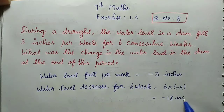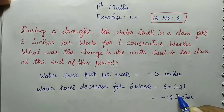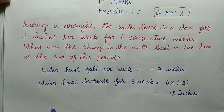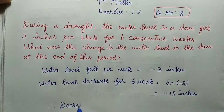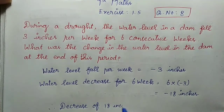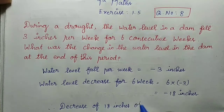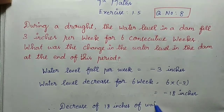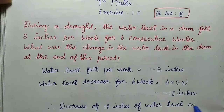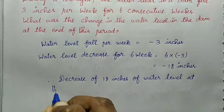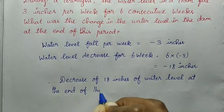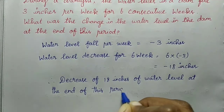Plus into minus gives minus. So the answer is minus 18 inches. Therefore, there is a decrease of 18 inches in the water level at the end of this period.